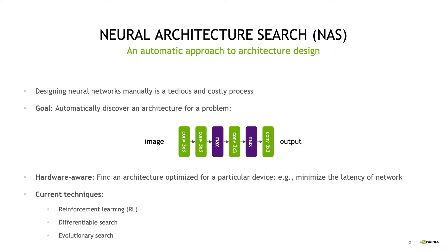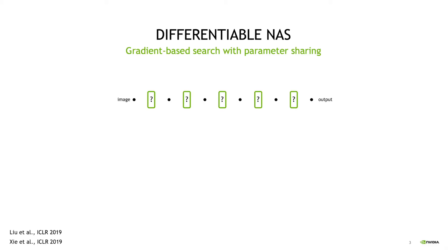The current state-of-the-art in NAS can be grouped into three categories, including reinforcement learning, differentiable NAS, and evolutionary NAS. Recently, differentiable NAS gained a lot of attention mainly because of its efficiency in search and its superior performance.